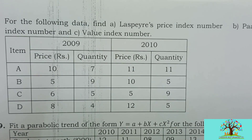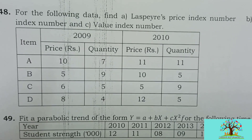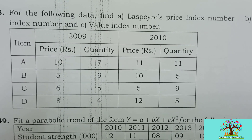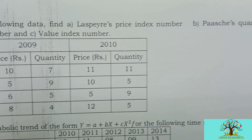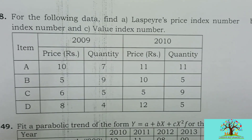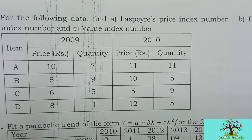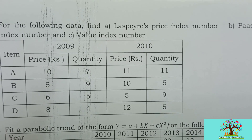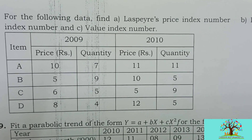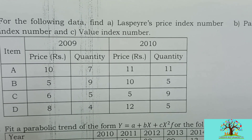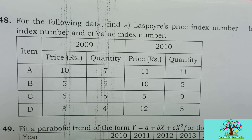Let us proceed to first write down the table for this question. Once we write the table, we will proceed to find out the different index numbers. In this question they have asked only three index numbers - Laspeyre's price index, Paasche's quantity index, and value index number. But I will explain how to calculate all the different price index numbers and quantity index numbers, and I will explain this at the end of the solutions.